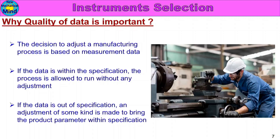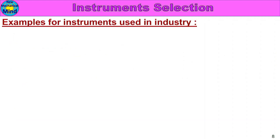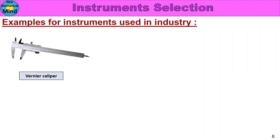Now let's talk about the examples for instruments used in industry. In industry, we use instrument data. We can see MSA and instrument handling. Let's talk about the reference instruments.